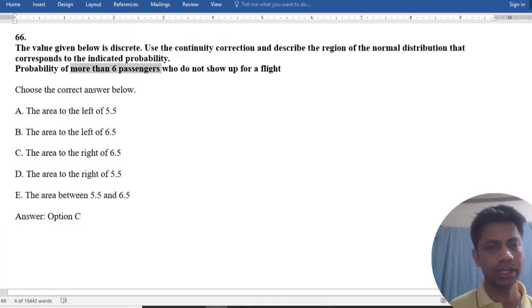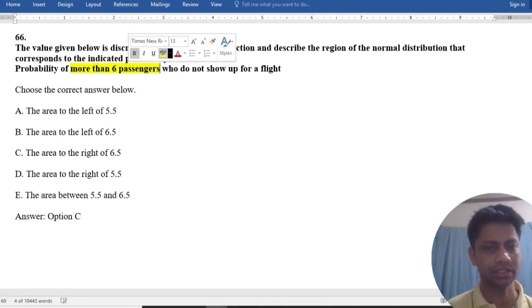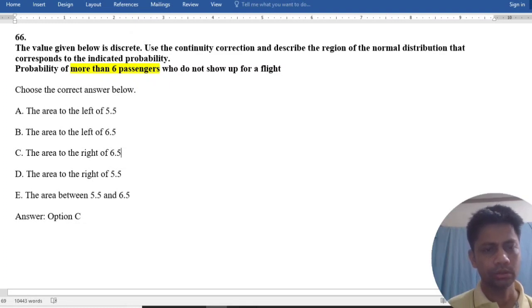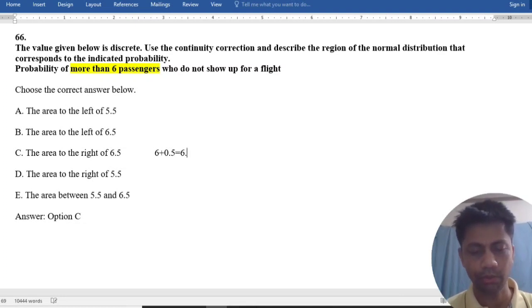It's more than 6 passengers. That means 6 plus the continuity correction factor 0.5 equals 6.5.